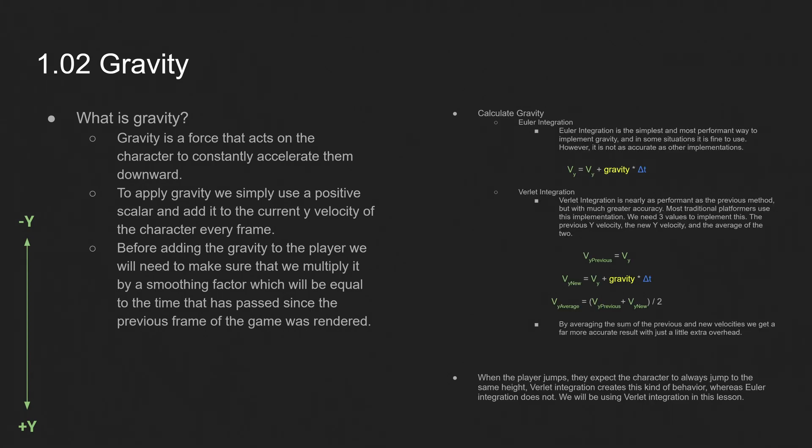So, to calculate gravity, there's two ways that you can do it. You can use Euler integration. And Euler integration is the simplest and most performant way to implement gravity. And it's completely acceptable to use it in certain situations. However, it's not as accurate as other implementations. And the calculation for Euler integration is also pretty simple. So, our velocity_y is just equal to our velocity_y plus our gravity times our smoothing factor, our delta time. It's really easy, works most of the time, but in certain situations you really don't want to use it.